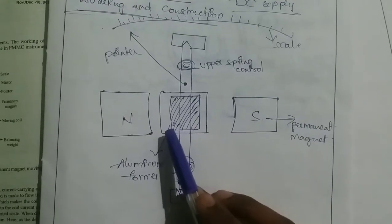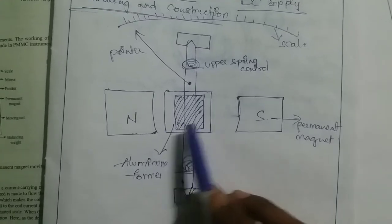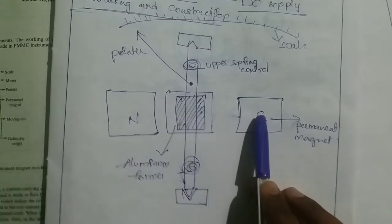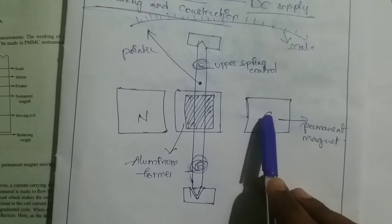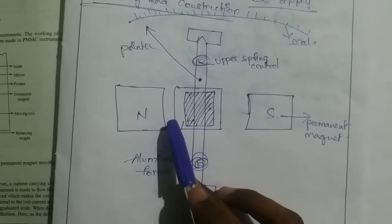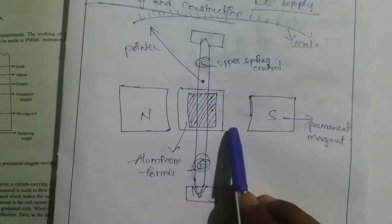Here, it will produce flux. It will react with the permanent magnet to produce flux. This will produce torque. This torque will rotate the spindle.